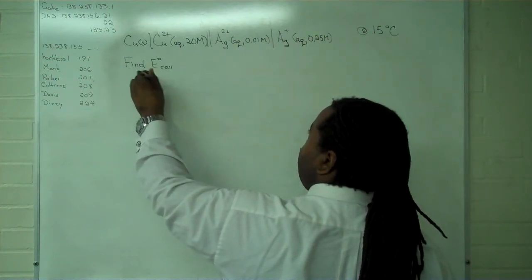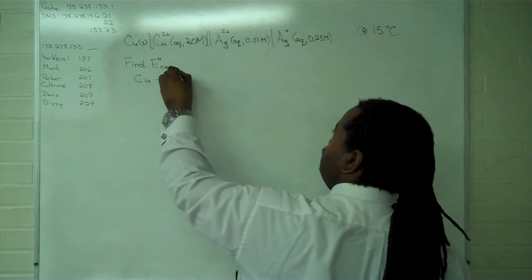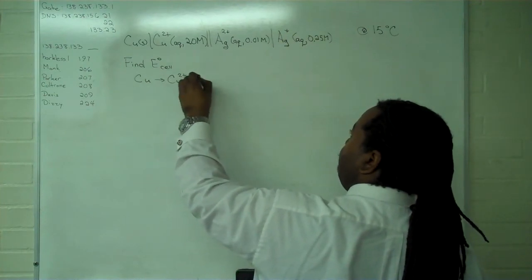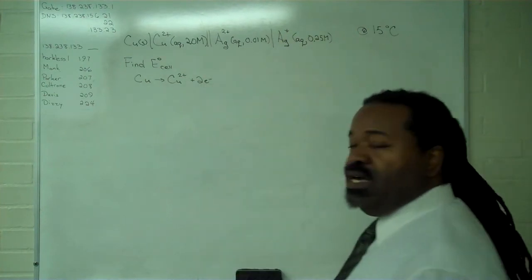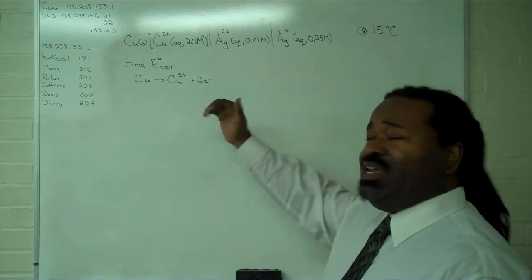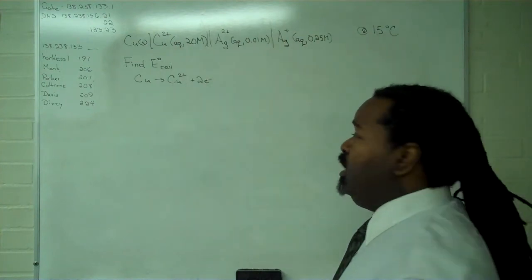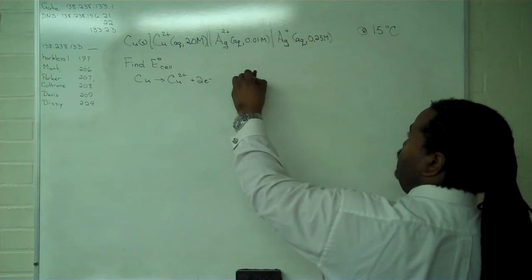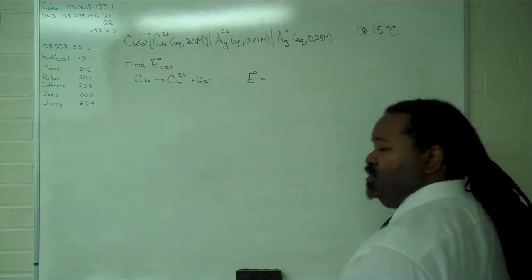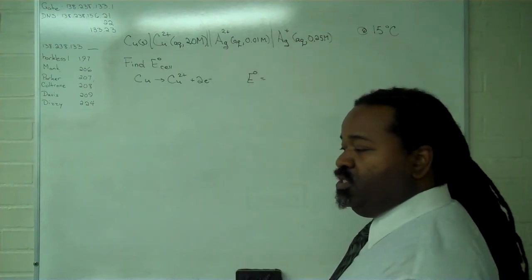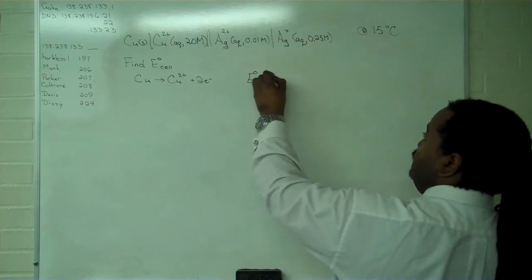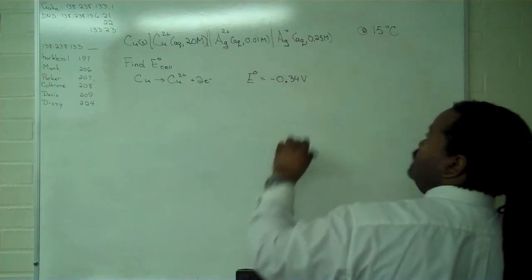So up first, we have copper. And this is not written as reduction. It is written as the oxidation. However, we know that we simply must look it up in the table for reduction potentials and reverse the sign. So we have negative 0.34 volts.